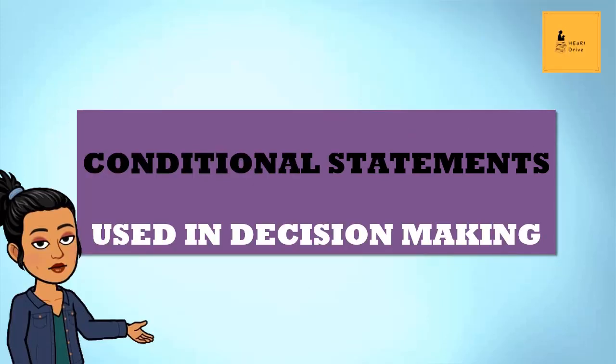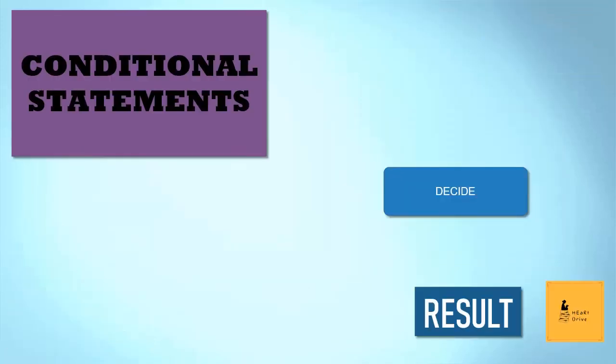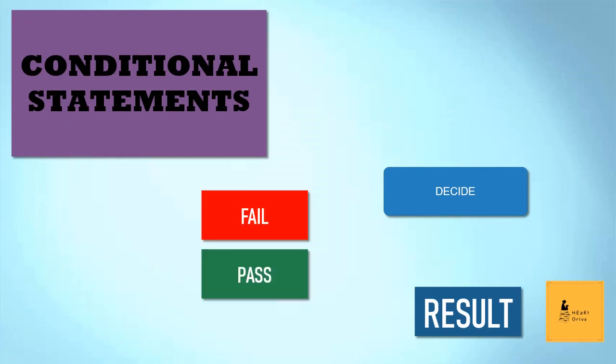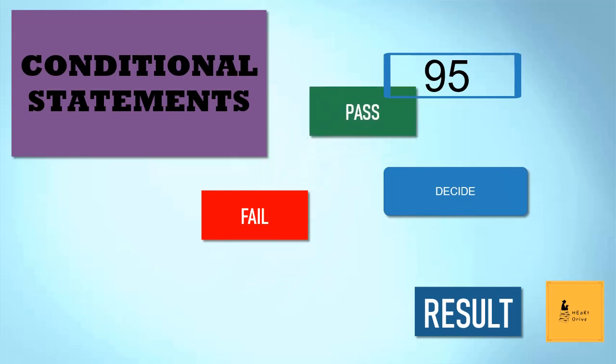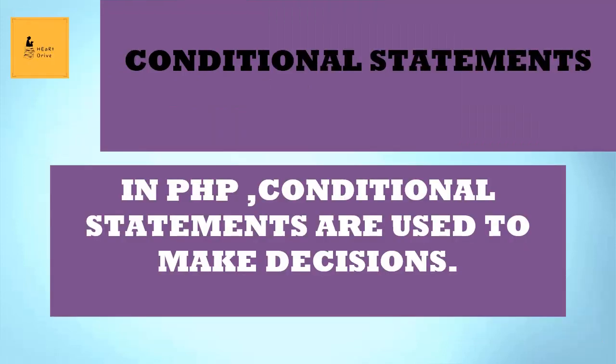Conditional statements are used when a decision has to be taken. For example, while writing results, a teacher has two possible results: pass and fail. But the decision has to be made by the teacher based on the student's mark. Likewise, in programming, if you wish PHP to make decisions on your data, you should use conditional statements.